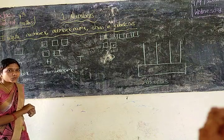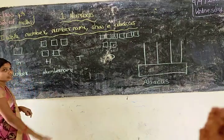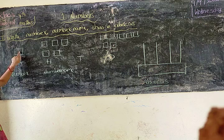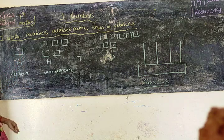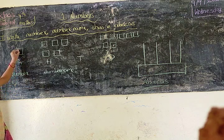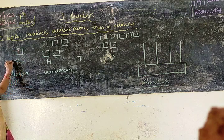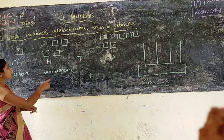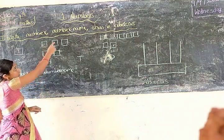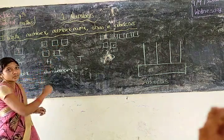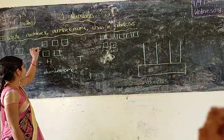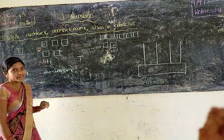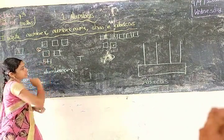So here we have the thousands place. In the thousands place, how many boxes are there? One box. So one thousand. In the hundreds place, how many boxes are there? Five. So five hundred.